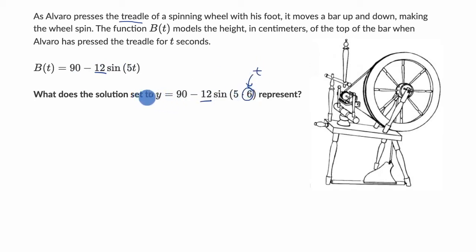So this is the solution set right over here tells us what is the height, because that's what b(t) is. b(t) equals y. What is the height when t equals 6? And remember, t is in seconds. So this is height of top of bar at 6 seconds.